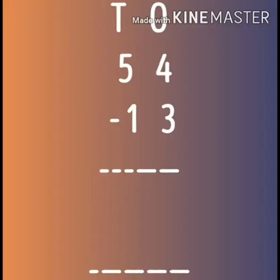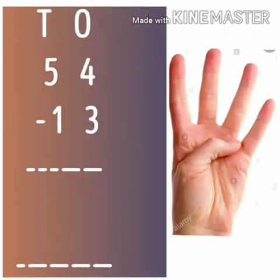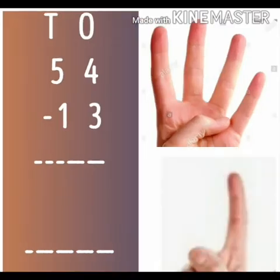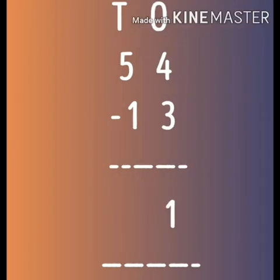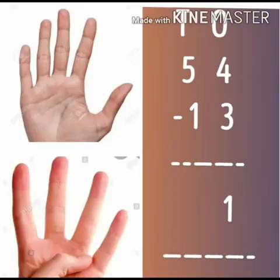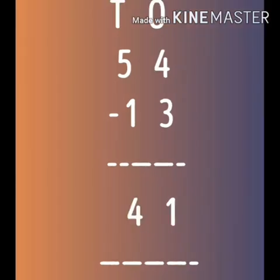In the next example, we have 54 minus 13. On the ones place we have four, so we will put up four fingers and three fingers down. How many are left? One finger. And from the left side we have five, so we will put up five fingers, then one finger down. How many are left? Four. So we will write four, and our answer will be 41.